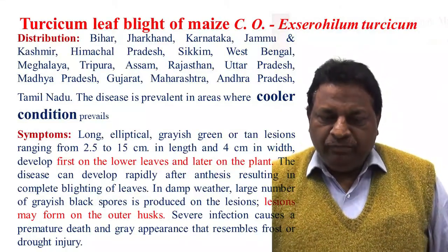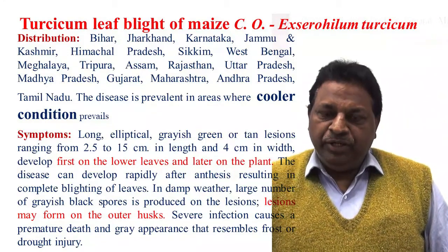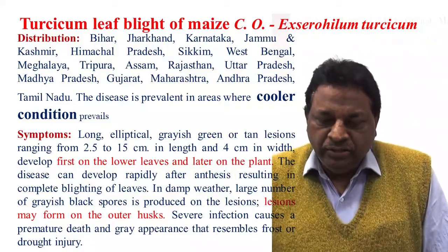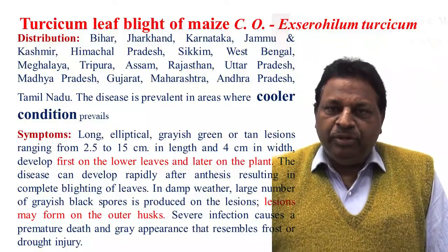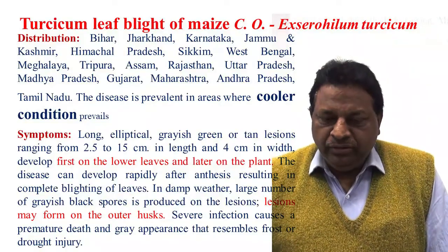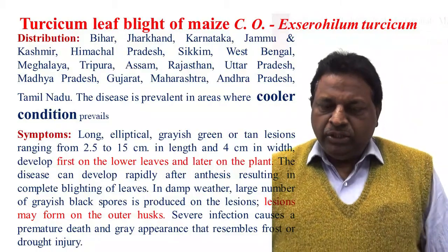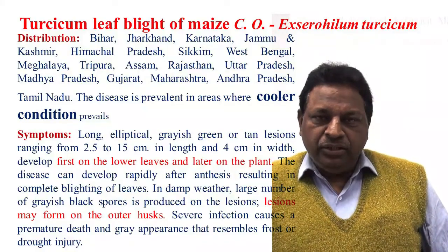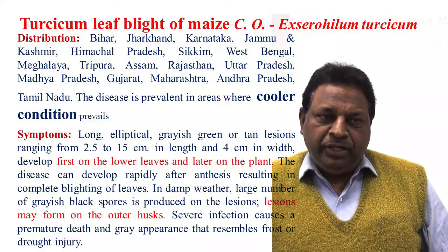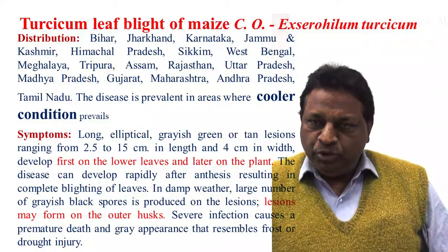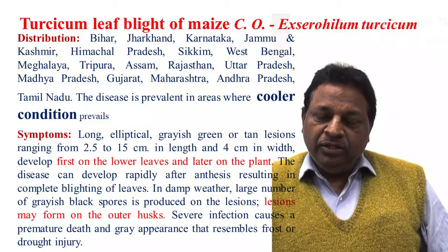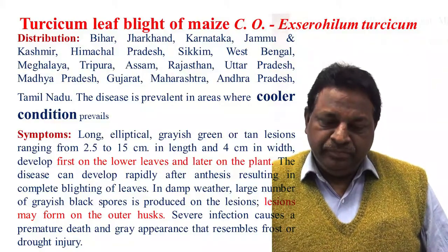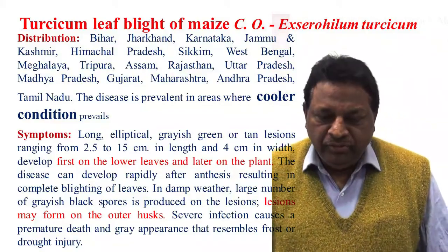Coming to the first disease, that is Turcicum leaf blight of maize. It is caused by Exserohilum turcicum. Earlier this disease was caused by Drechslera turcicum or Helminthosporium turcicum, and the perfect stage is Drechslera turcicum. Now it has been changed to Exserohilum turcicum. This disease is very common in Bihar, Jharkhand, Karnataka, Jammu and Kashmir, Himachal Pradesh, Madhya Pradesh, and Maharashtra.